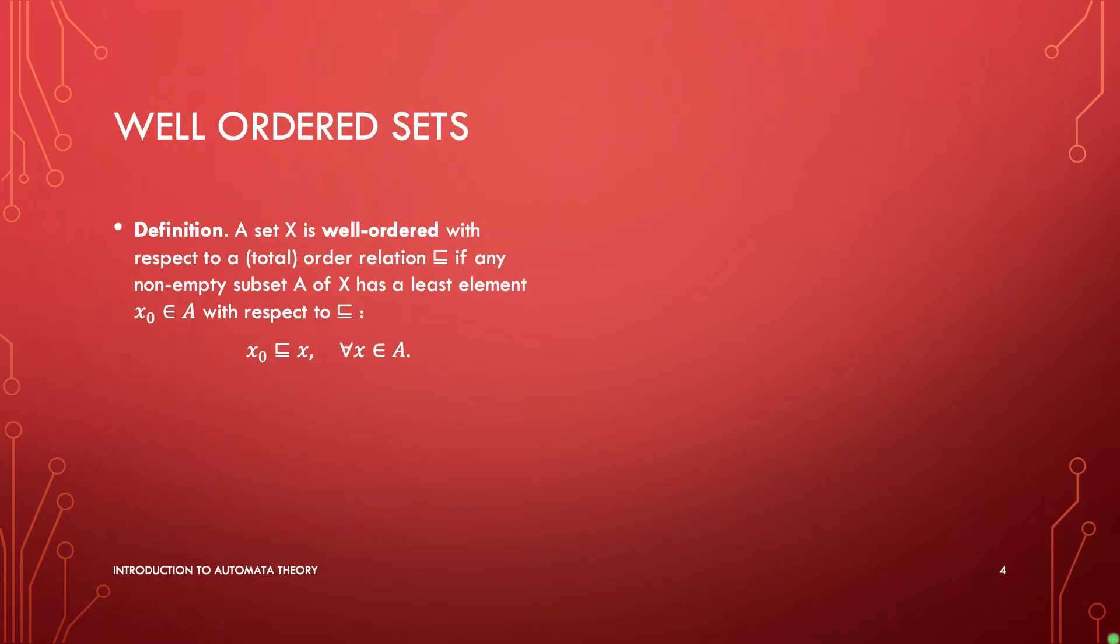A set X is said to be well-ordered with respect to some order relation if any non-empty subset A of X has a least element x_0 with respect to this order relationship. This means that for any non-empty subset A of X, there is an element in A that is smaller than or equal to any other element of A. If this property holds for any non-empty subset A of X, then we say X is well-ordered.